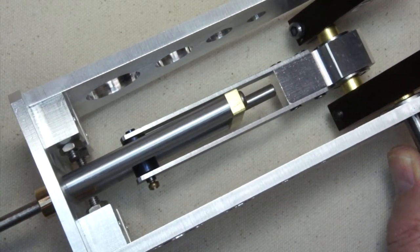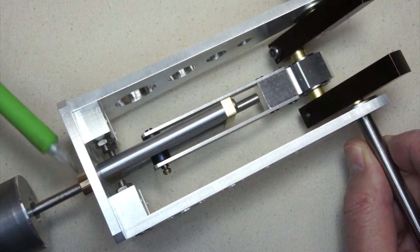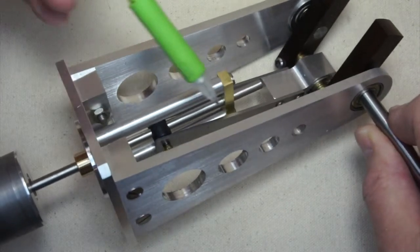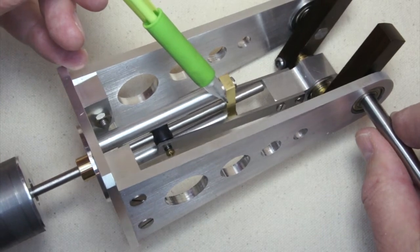So the displacer rod is supported in two places: one by the gland where the rod exits the workspace, and again up here near the far end of its stroke by an additional bearing point.